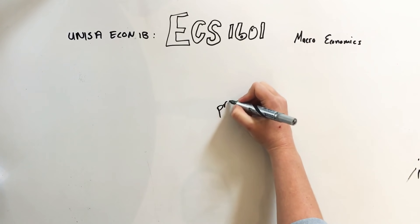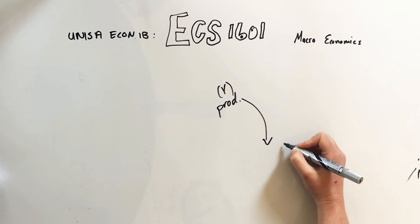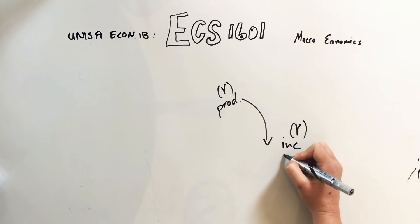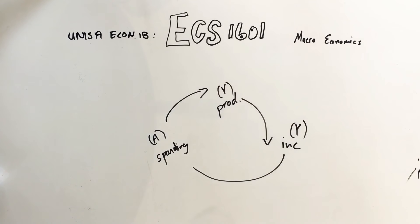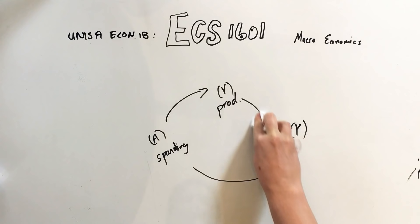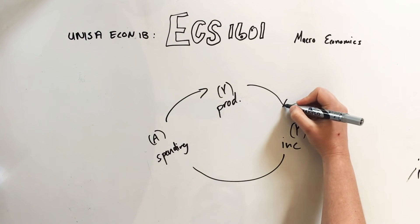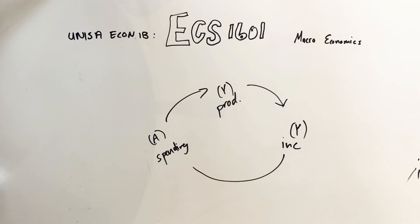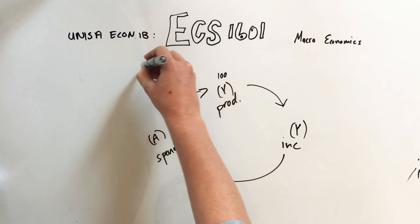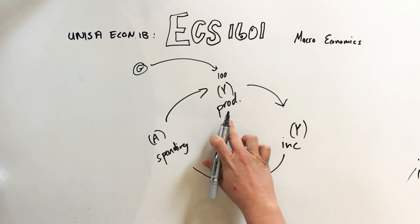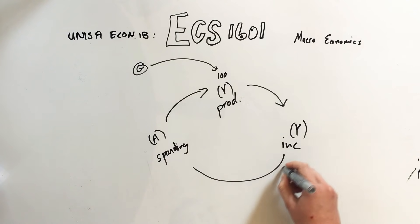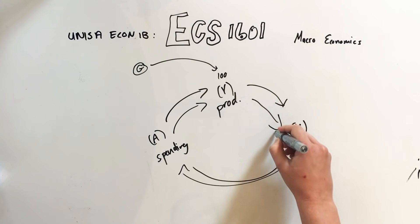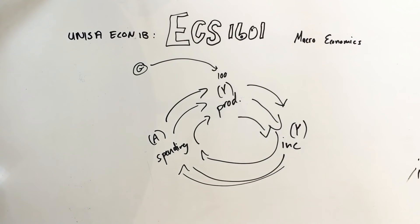Back to the circular flow: we have production which is Y, income which is also Y, and spending which is A. Now I'm going to start making it a little bit harder. The economy now gets something called a multiplier. If the government injects a hundred rand into production, it gets produced, there's income of a hundred rand, it gets spent again — the spending leads to more production, which leads to more income, which leads to more spending, which leads to more production.